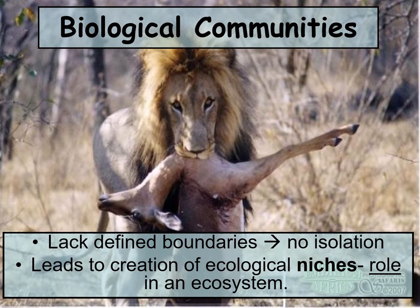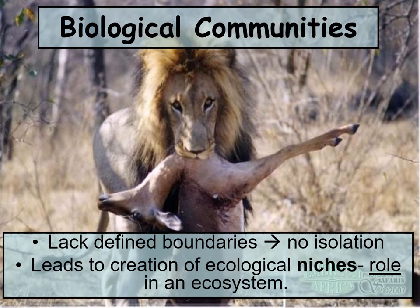Many of these biological communities lack defined boundaries, so there really is no clear isolation between a freshwater river and an estuary — they blend together. Because of this blending of communities, you will see organisms developing what are called niches, which are the roles that these organisms play in their ecosystem. For example, the niche of a lion would be to be a top predator.